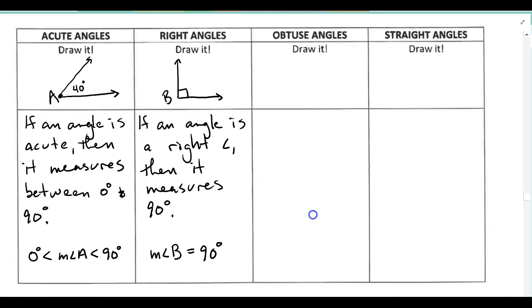So if at this point you want to go ahead and give a try at writing a definition for an obtuse angle, when you come back, we'll go through it together. So go ahead and pause if you'd like to and see if you can draw an example and write the definition. So go ahead and do that now.